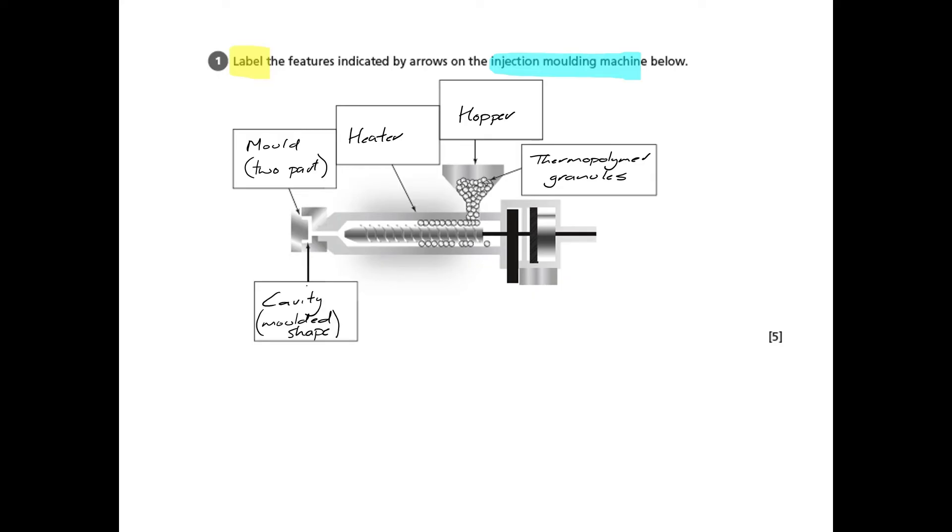Bottom left, we've got the cavity. You can see the granules in this machine are only halfway along, so it isn't actually molded yet, but you might want to say this is where the molded shape would be. Cavity is probably the correct term for this section.